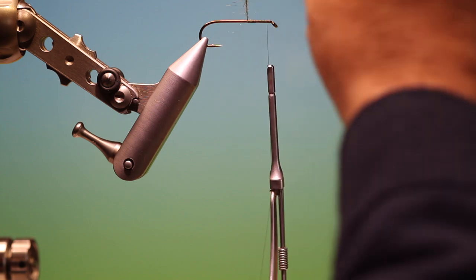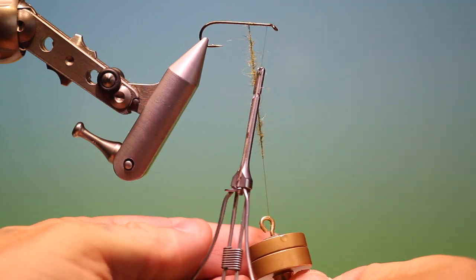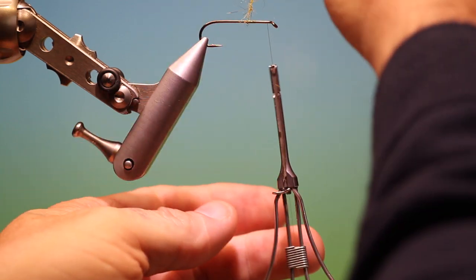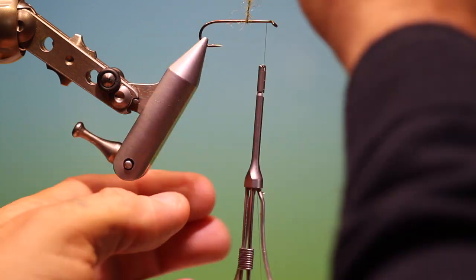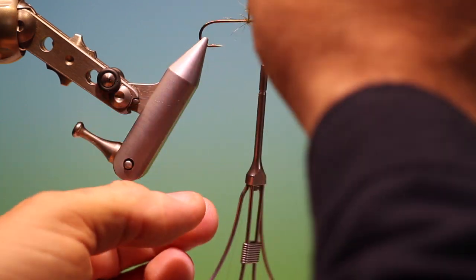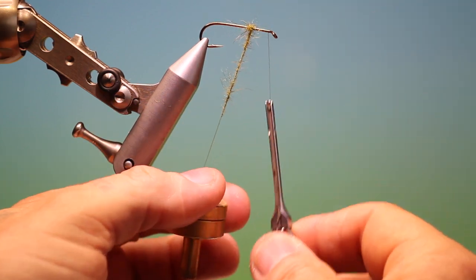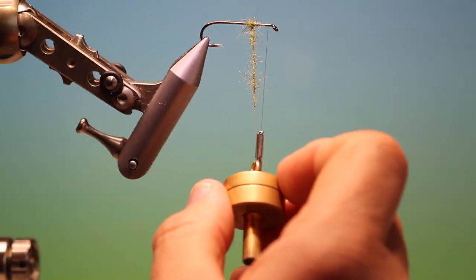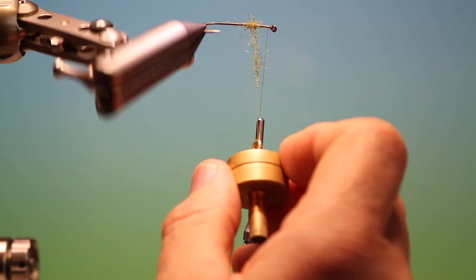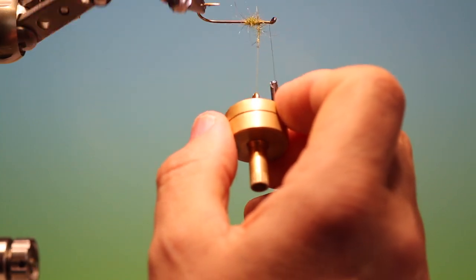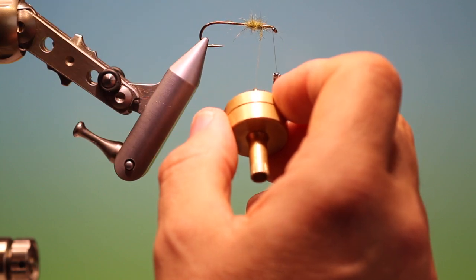That's good. Then we take the dubbing spinner and use it as you would a hackle plier, and we can wind our dubbing forward. Or if you have a rotary vise, you can just wind it on like so.